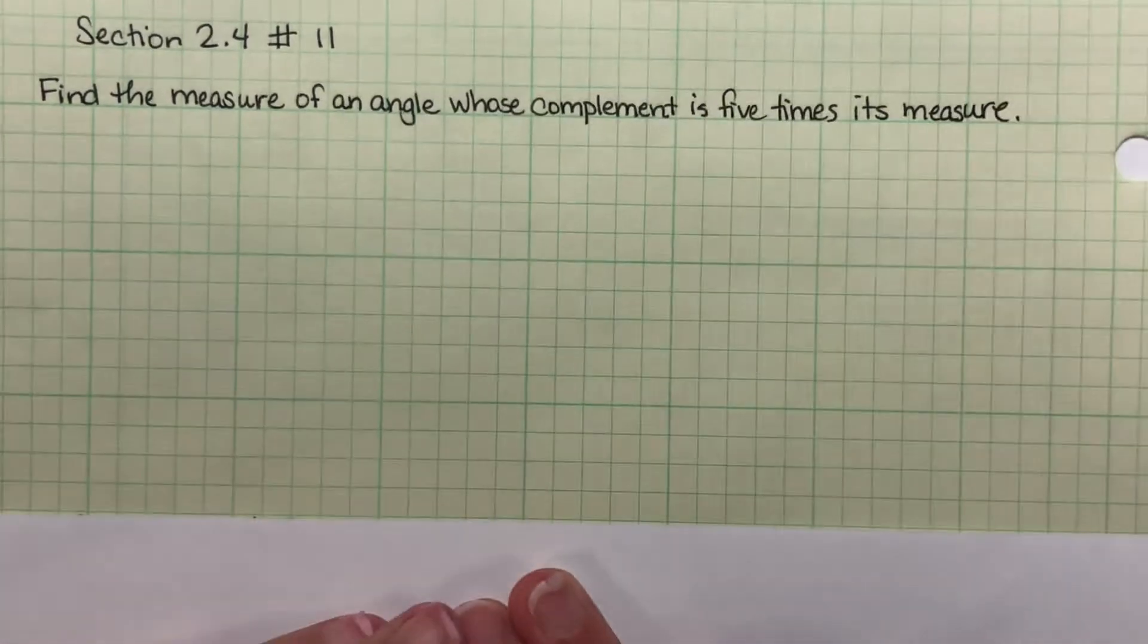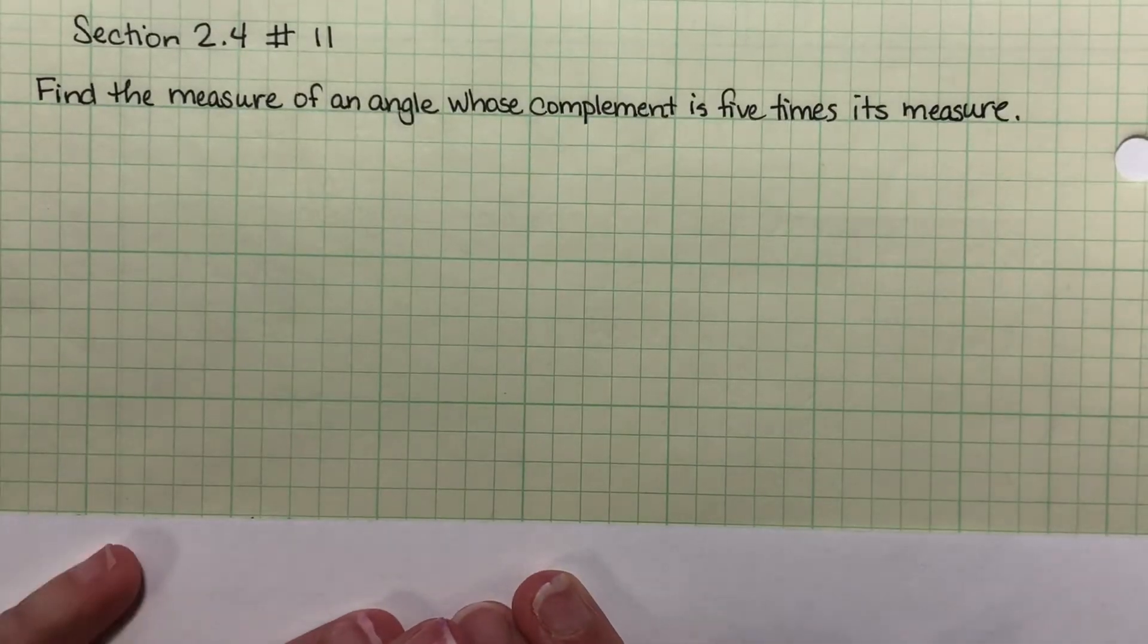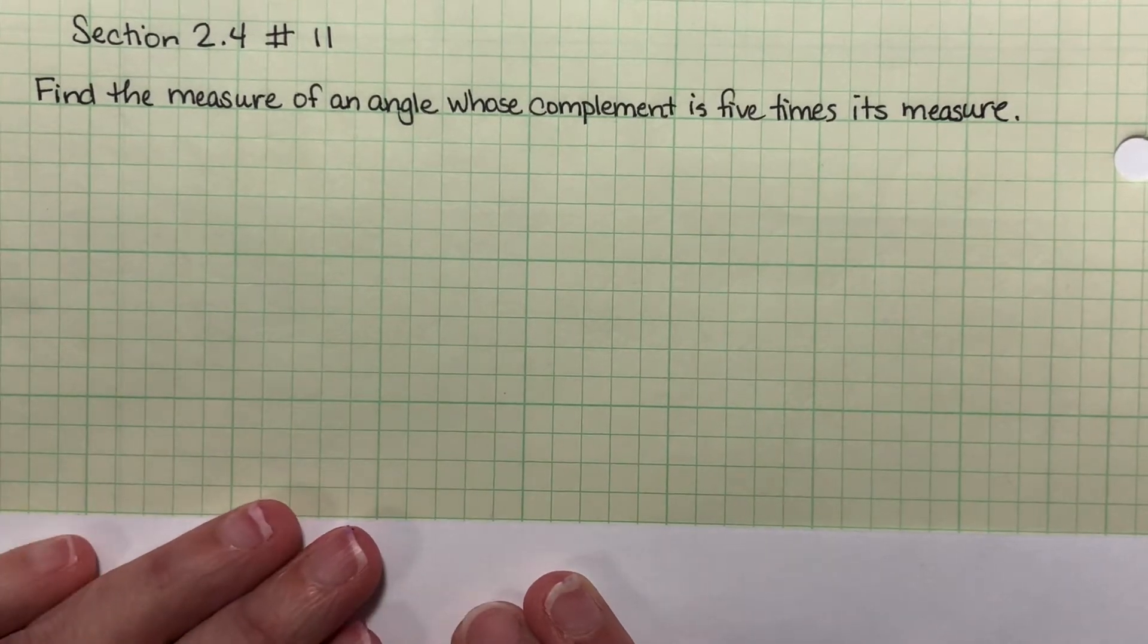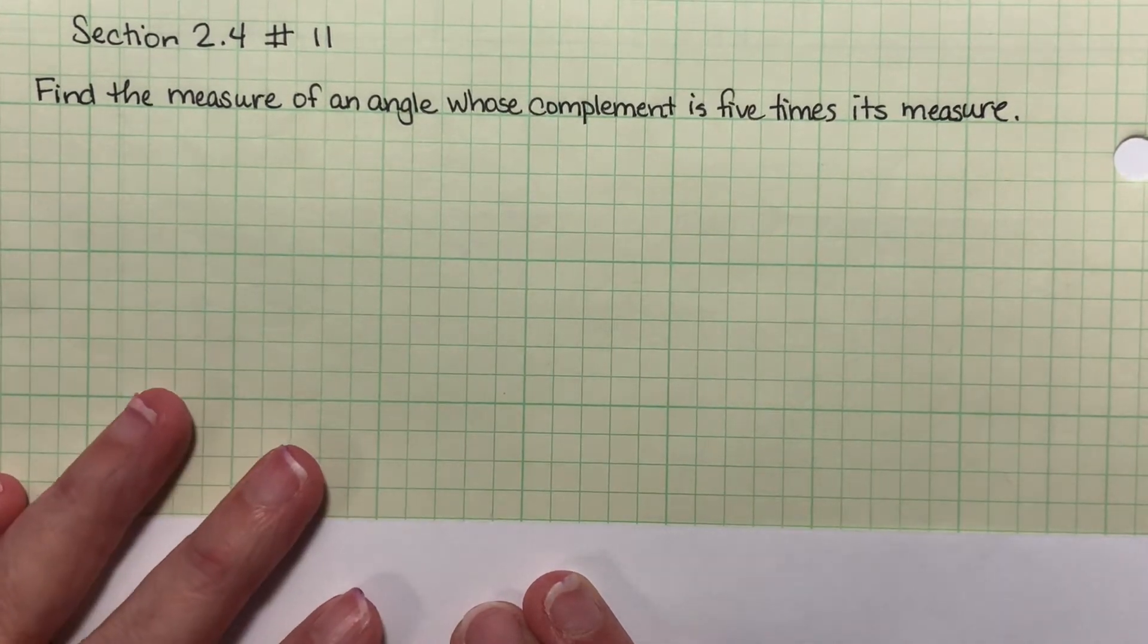This is problem number 11 from section 2.4. Find the measure of an angle whose complement is five times its measure.